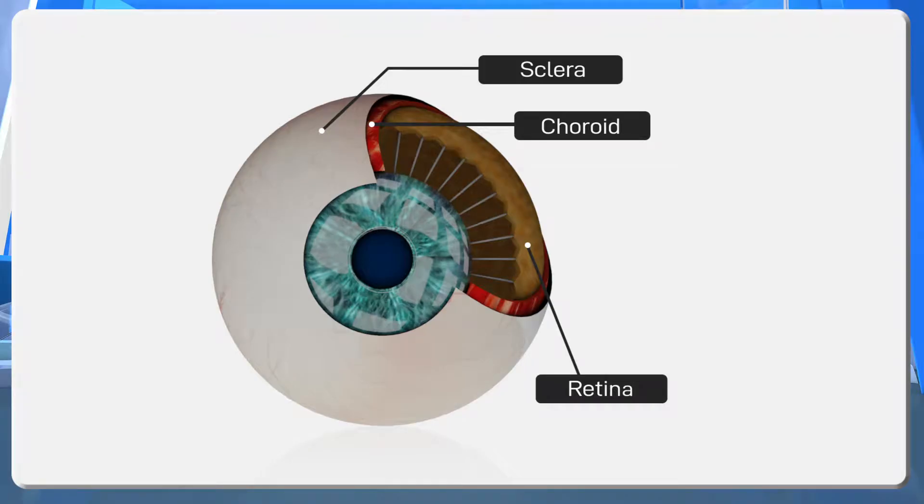Sclera: The white outer layer which gives firmness to the eye. Made up of connective tissues. Choroid: The middle layer which contains a large number of blood vessels. Retina: The inner layer which has photoreceptors. Let's discuss the more details about the layers of the eye and its parts.